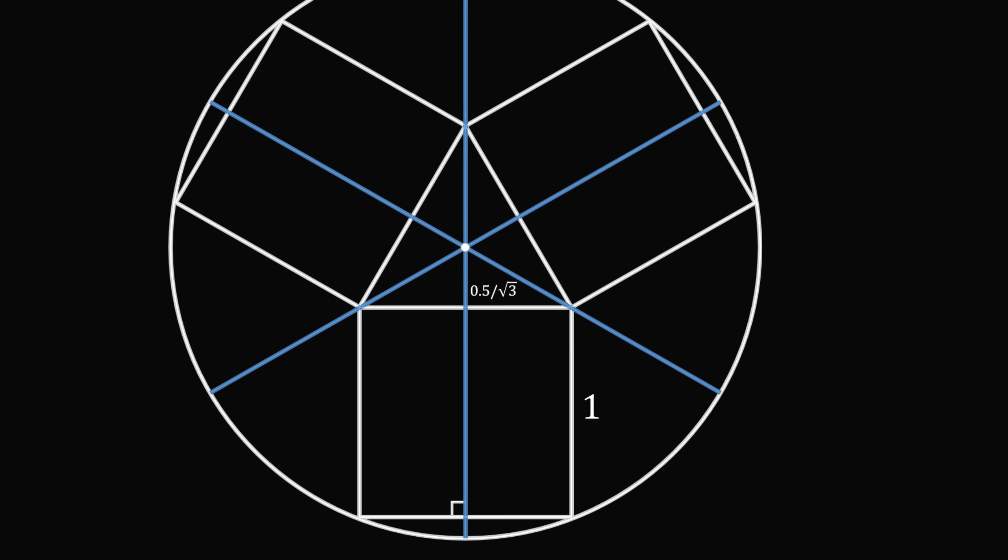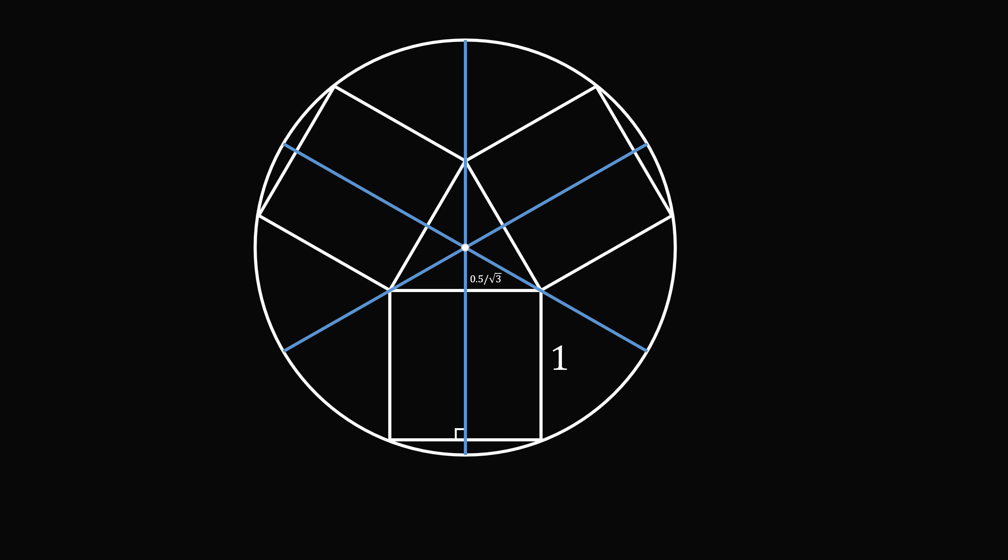Now, let's zoom back out. Let's construct the following right triangle. The shorter leg will be half the side of the square. It will be equal to 0.5. The longer leg will be 0.5 divided by the square root of 3 plus 1, and the hypotenuse will be the radius of the circle.